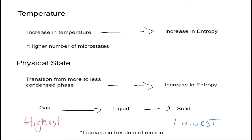Now, the second factor is the physical state, so this involves also the phase changes in the system. A transition from a more to less condensed phase results in an increase of entropy. The most condensed phase is solid, then liquid, and then gas, meaning that going from a solid to a liquid results in an increase in entropy, and going from a liquid to a gas also results in an increase in entropy. So the gas has the highest entropy, and the solid has the lowest entropy, and this is due to an increase in freedom of motion.